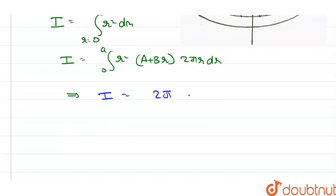This implies I is equal to 2π into [A r³ plus B into r to the power 4] integrated from 0 to a.